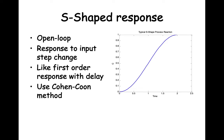This slide shows the S-shaped response that an open loop process with a controller disconnected will produce in response to a small step change. With this graph, you can use the Cohen-Kuhl method.